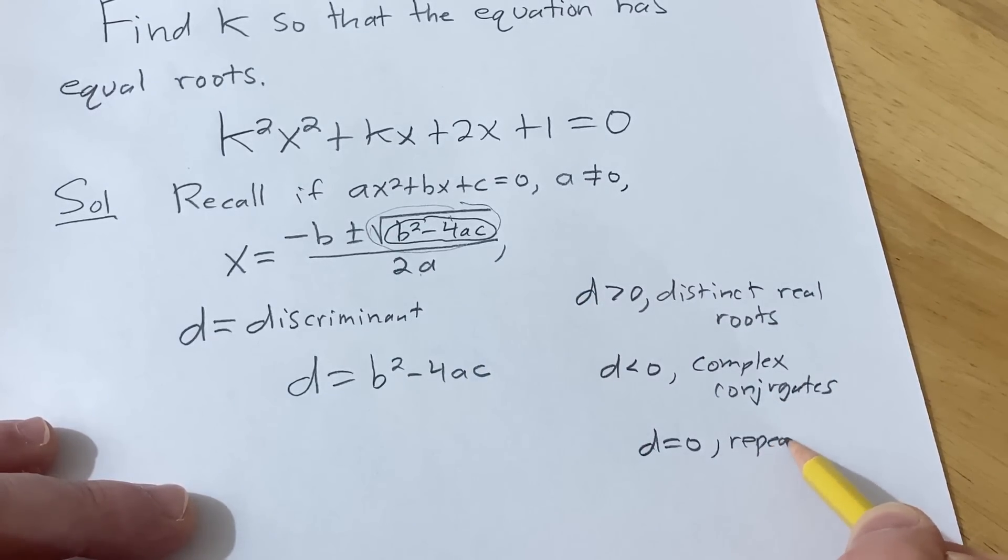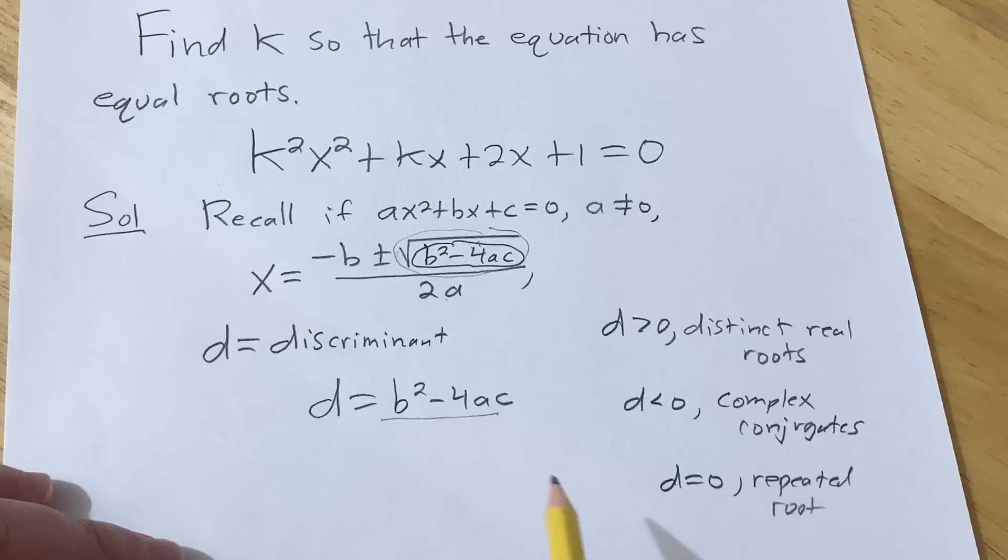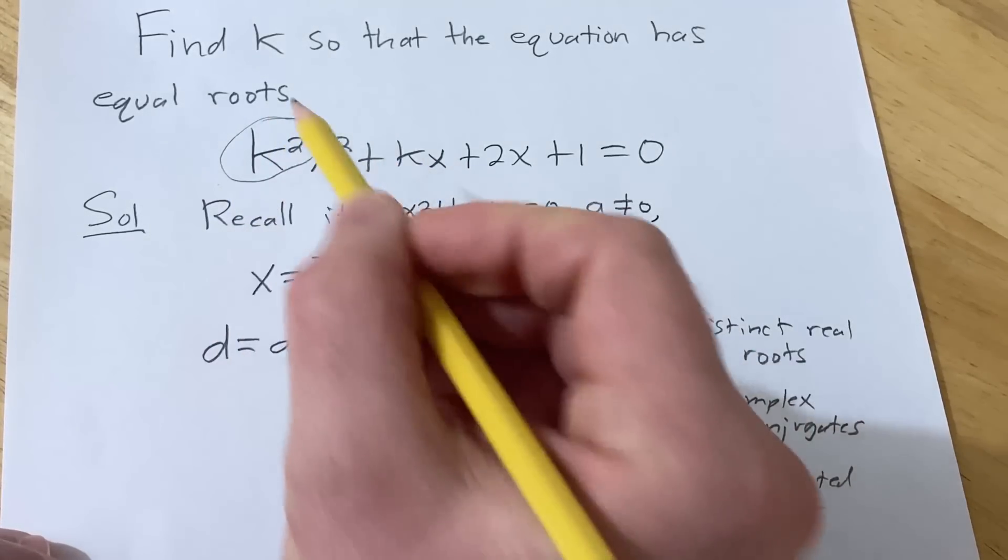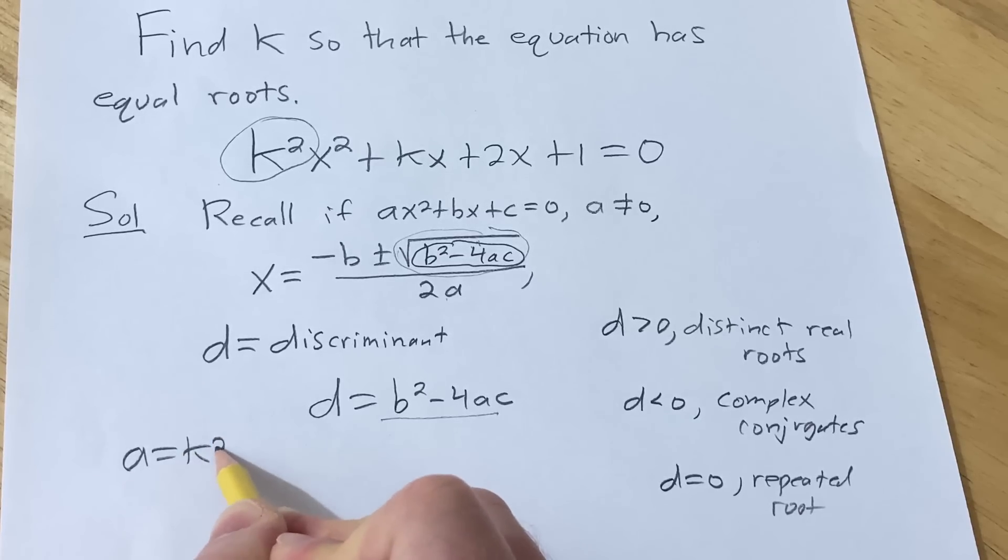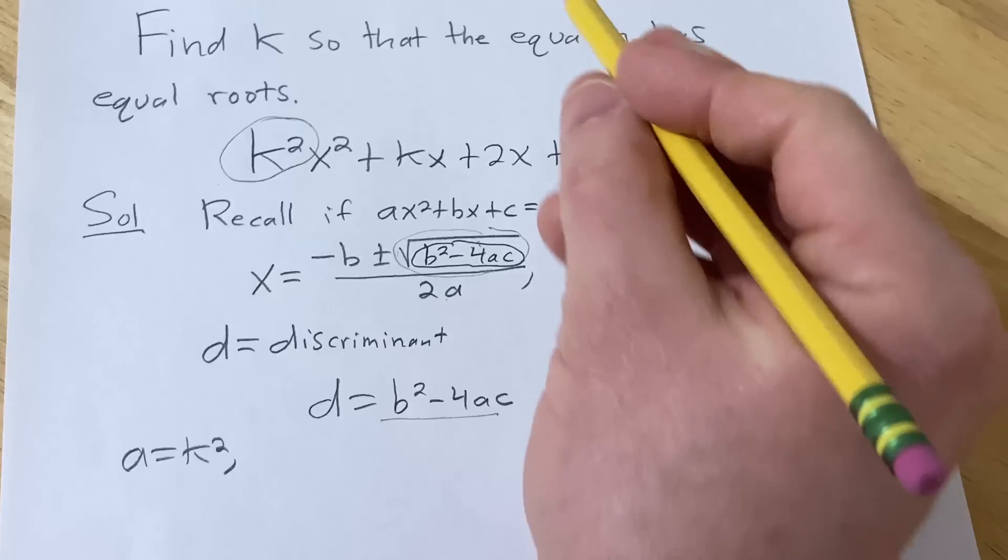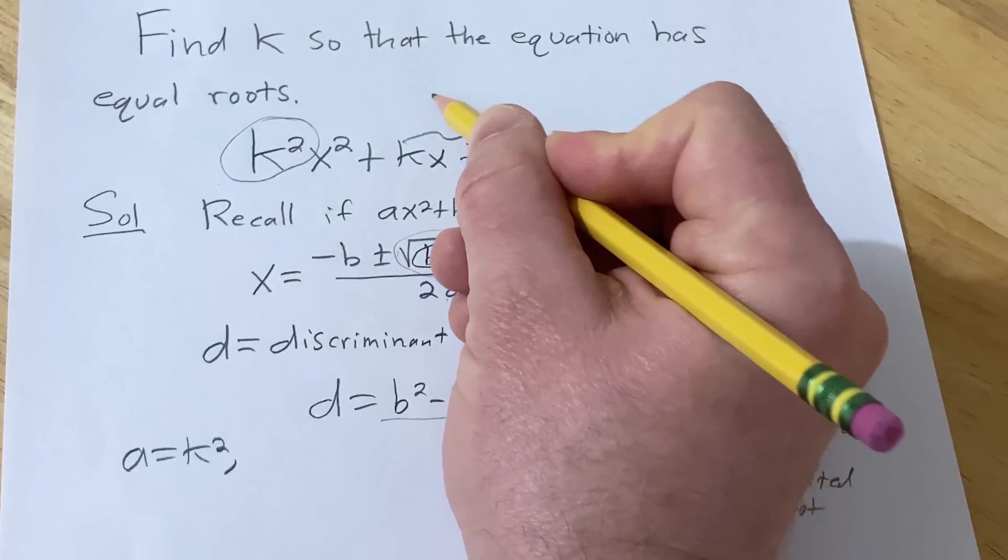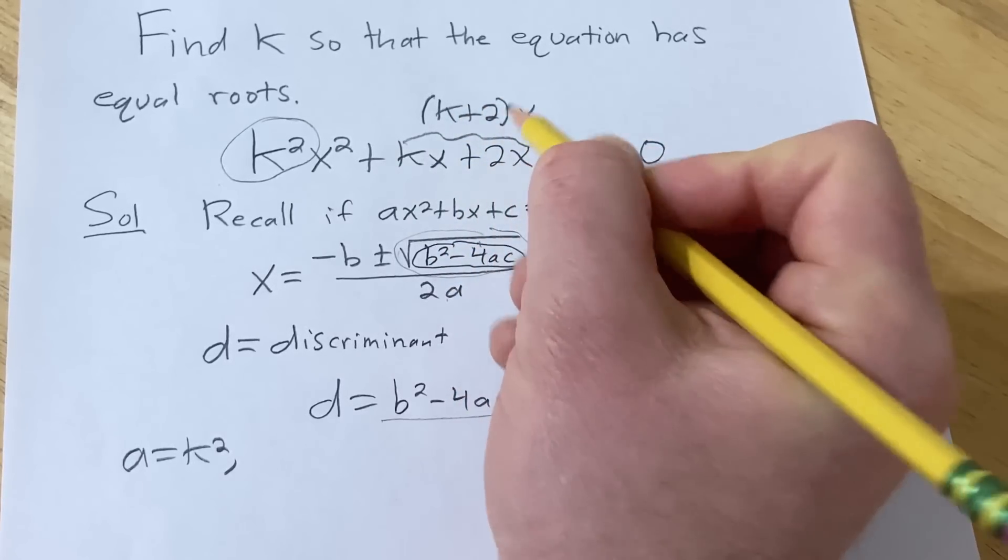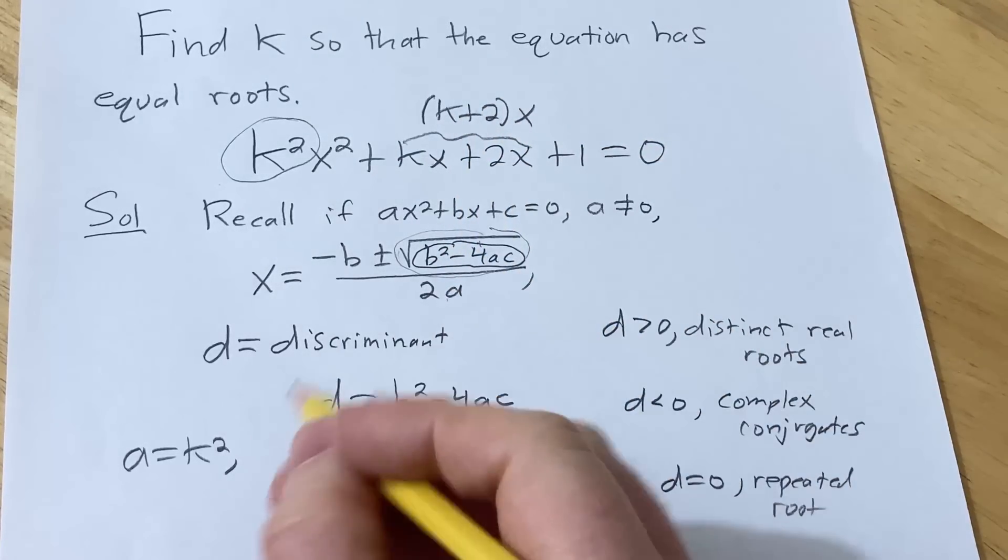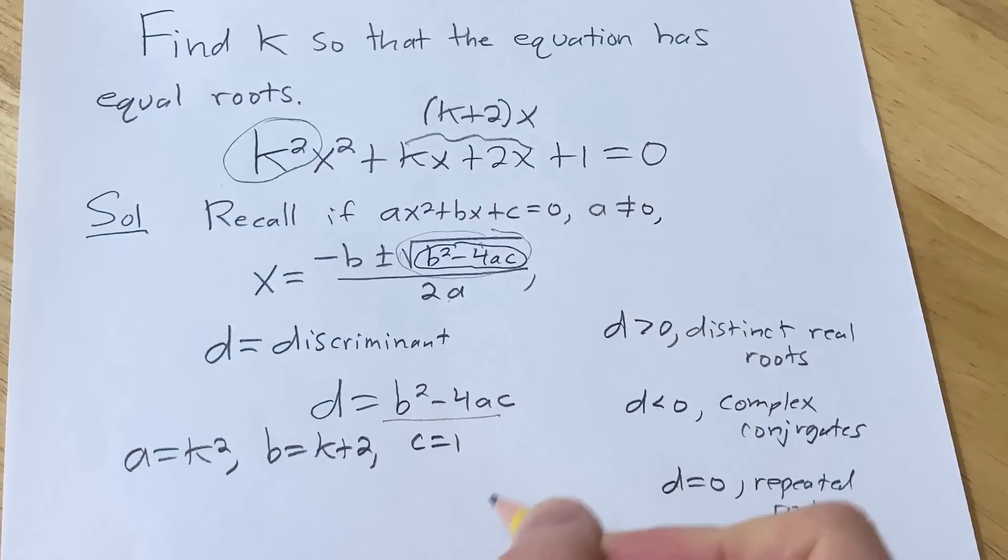So in this case, we're going to get a repeated root. The problem just says equal roots, but same thing. So we just have to figure this out. We have to make this equal to 0. So in our particular problem, a is k squared. b, we have to find b. So to find b, you'll notice that we have kx plus 2x. So we have to rewrite this. What you can do is you can pull out the x. So this becomes k plus 2 times x. So your b is k plus 2. And then your c is equal to 1.